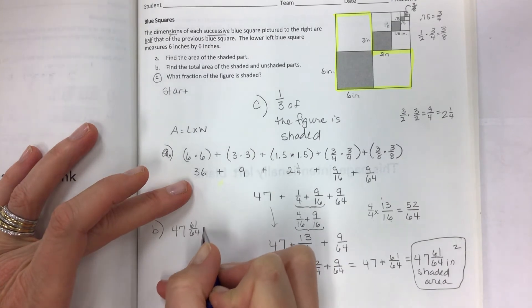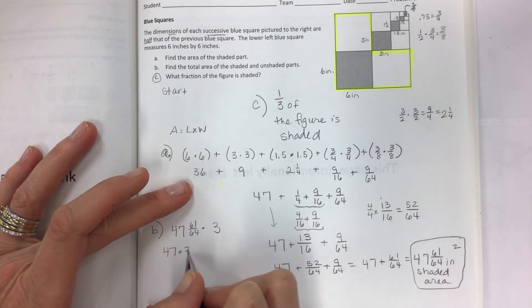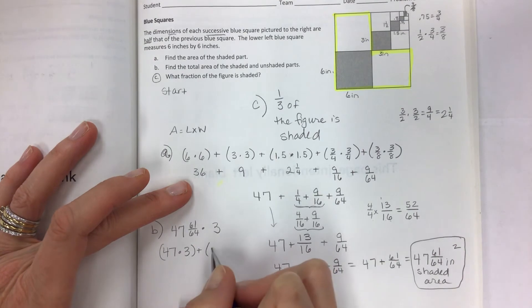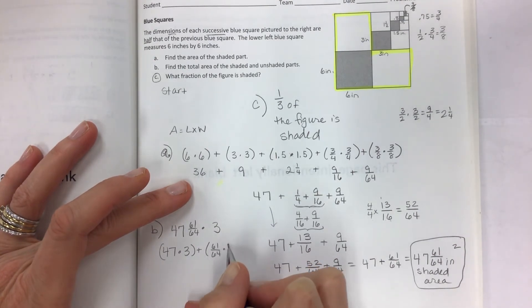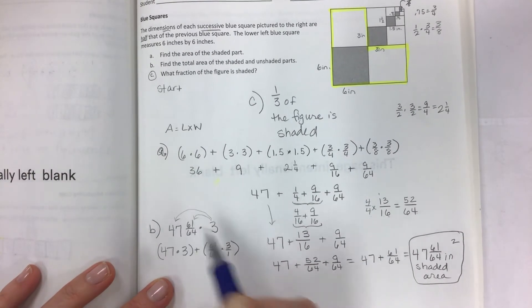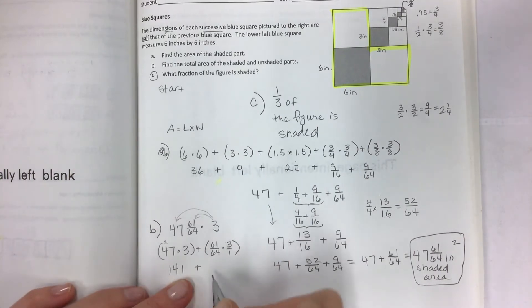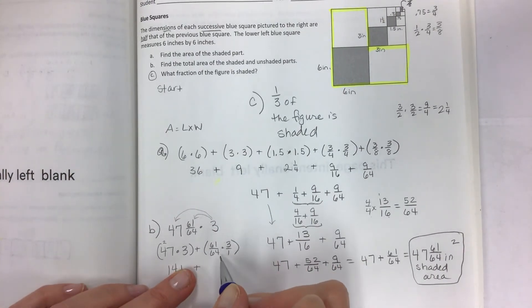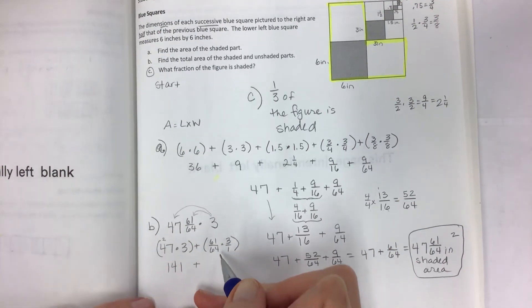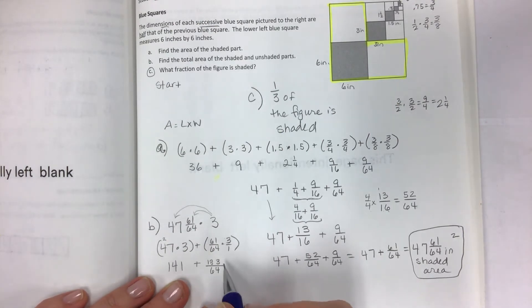Which means it's 47 times 3 and 61 sixty-fourths times 3. Okay, so we're going to take each one apart so that this is times this and this is times that. Okay, so 7 times 3 is 21, 4 times 3 is 12. So 141. And nothing can be cross-canceled because 63 would be a multiple of 3, because 6 and 3 are multiples of 3, but 64 would not work. So let's just multiply it straight away. 3 times 1 is 3, 3 times 6 is 18 for the top. 64 times 1 is 64 and we need to get this to be simplified. It's an improper fraction.